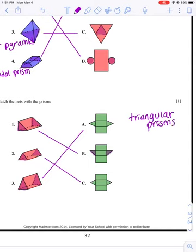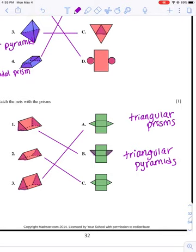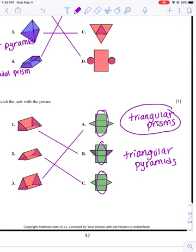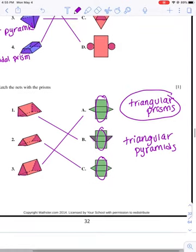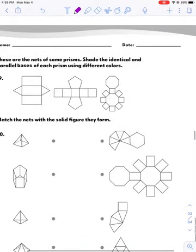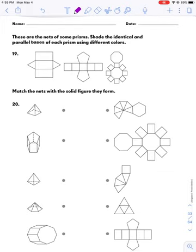Now, all of these shapes are the same. I want you to tell me - are all of these shapes triangular prisms, or are all of these shapes triangular pyramids? These are all triangular prisms. The reason for that is if you look at all the sides that are not the bases, they're all made of rectangles. Rectangles go with prisms, not pyramids.